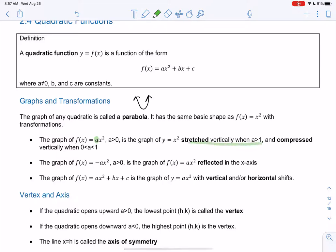So when a is bigger than 1, it's stretched, it's steeper. When a is less than 1, it's compressed, so it just looks shorter and fatter in a way.